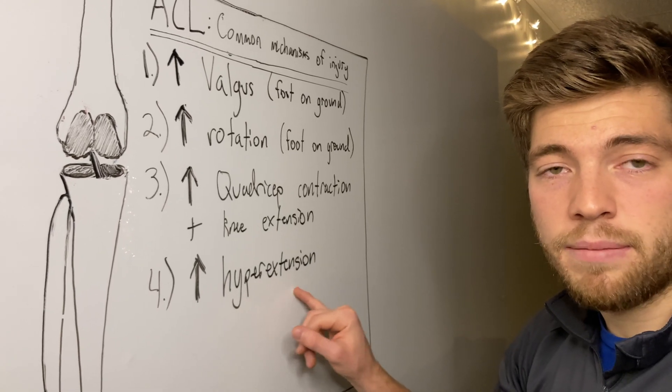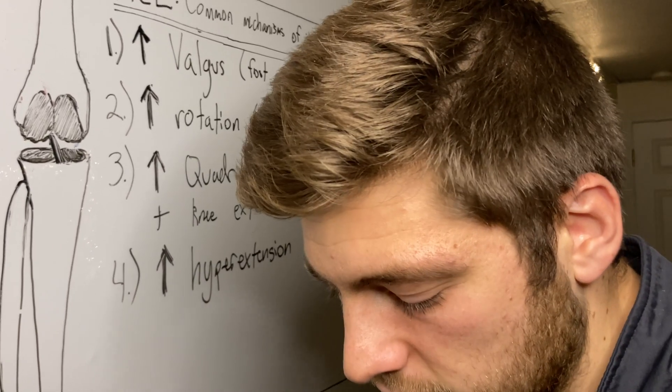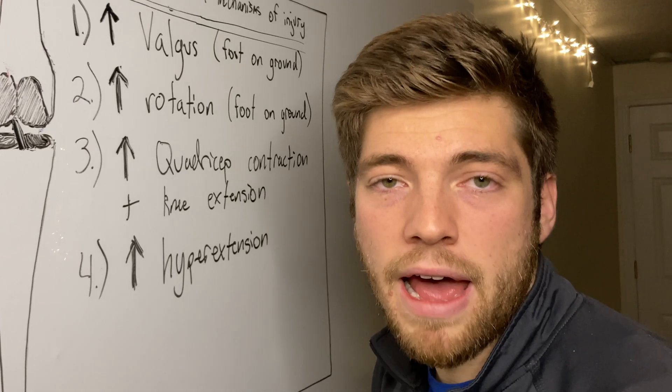I guess a classic example of this is if you were to do like a jump stop in basketball, but your leg was completely straight and you had this strong quadriceps contraction wanting to pull the tibia forward and then femur backward.